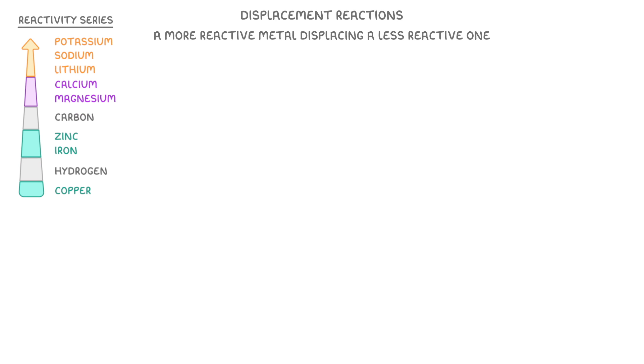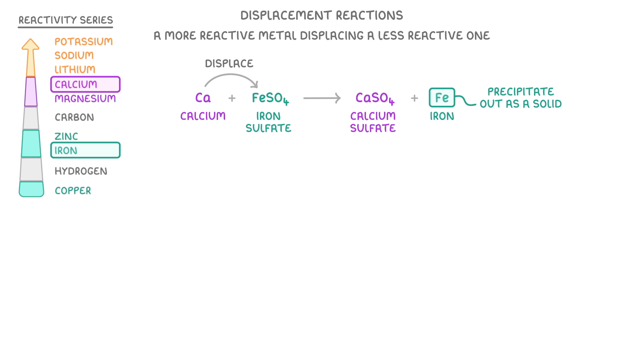Another place we see redox reactions is in displacement reactions, which involve a more reactive metal displacing a less reactive one. For example, if we look at our reactivity series, we can see that calcium is more reactive than iron. So if we added some calcium to a solution of iron sulphate, then the calcium would displace the iron to form calcium sulphate, while the iron would precipitate out as a solid.